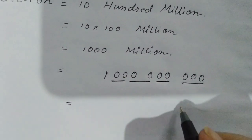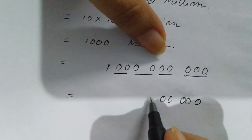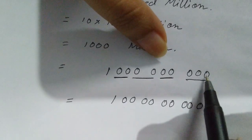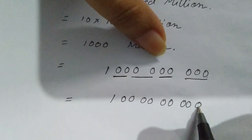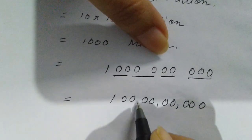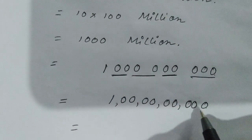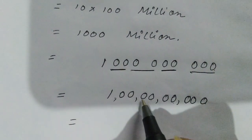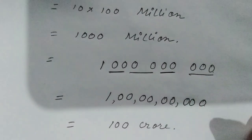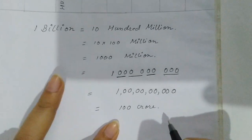Writing it out in the Indian system, the groups of digits correspond to: ones, tens, hundreds, thousands, ten thousands, lakh, ten lakh, one crore, ten crore, and this gives us 100 crore. So one billion equals one thousand million, which equals 100 crore.